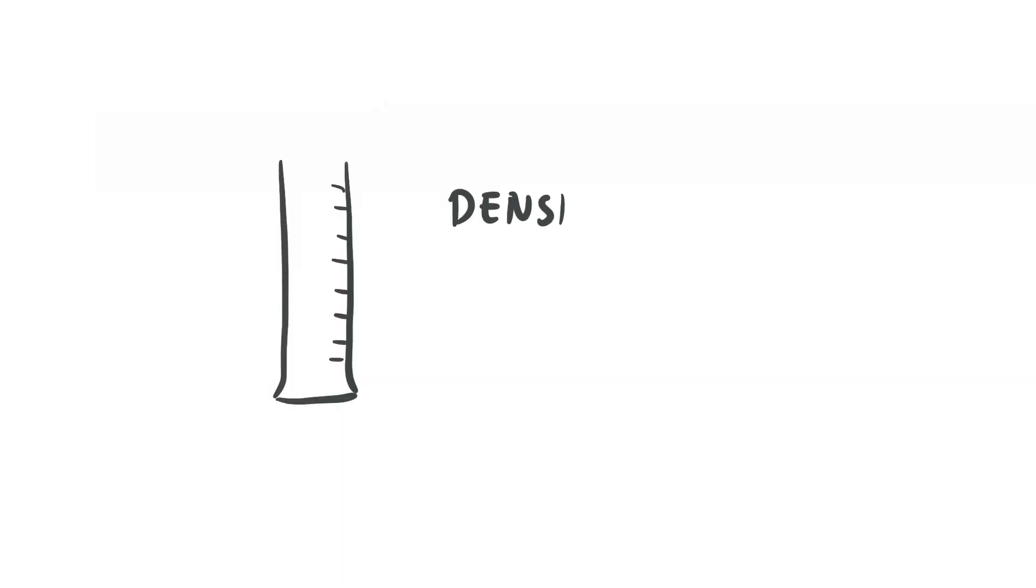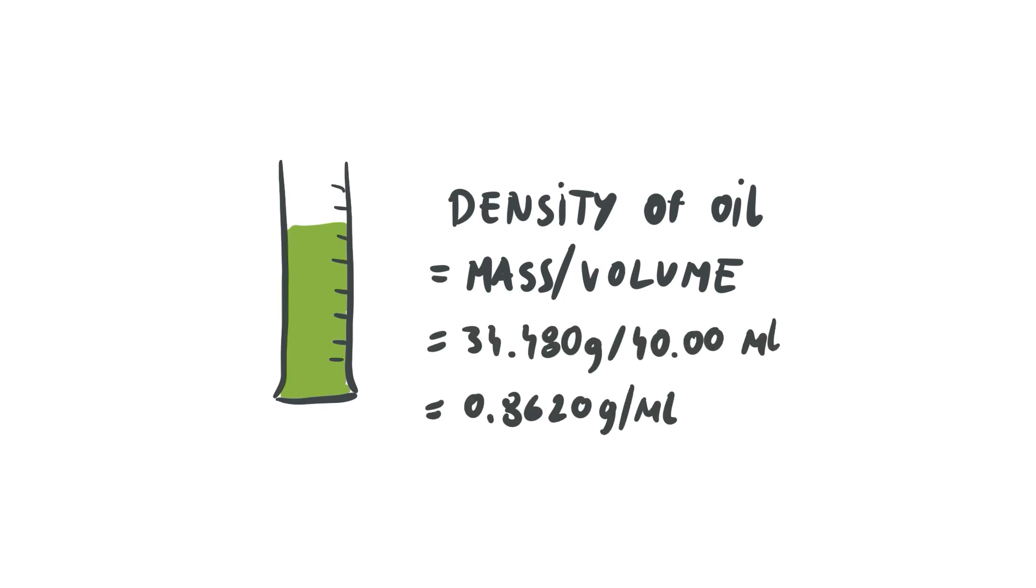The density of the mineral oil can then be calculated by dividing the mass of the oil by the volume it occupies in the cylinder, resulting in a density of 0.8620 grams per milliliter.